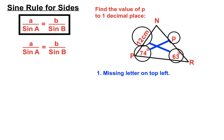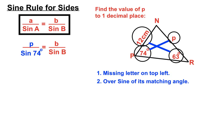Step one: we always put the missing thing — the missing side — on the top left. So we'll put P up the top left. Then we put that over the sine of its matching angle. The angle matching P is the capital P angle, so 74 goes underneath: sine 74. Every angle has to have a sine next to it. We've put the side on the top and the sine of the angle underneath.